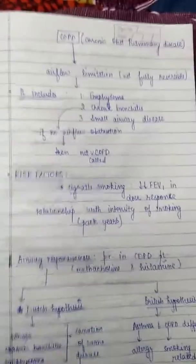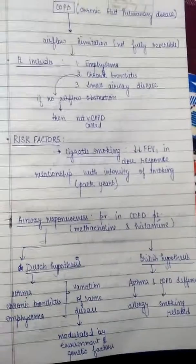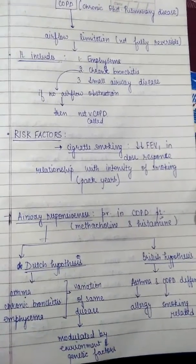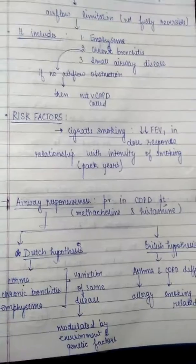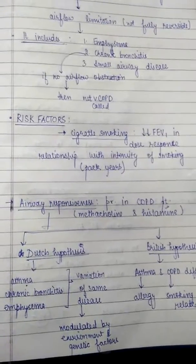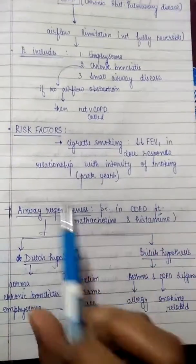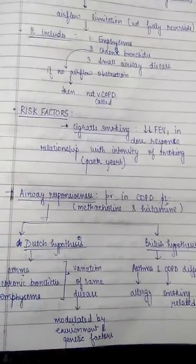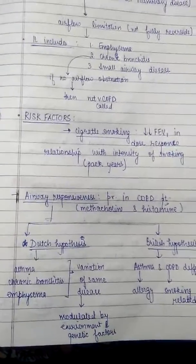The risk factors of COPD include cigarette smoking. We calculate the risk in pack years — the number of cigarettes smoked per day multiplied by the number of years. Decreased forced expiratory volume in the first second (FEV1) occurs in a dose-response relationship with the intensity of smoking.